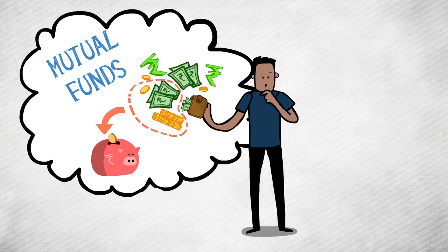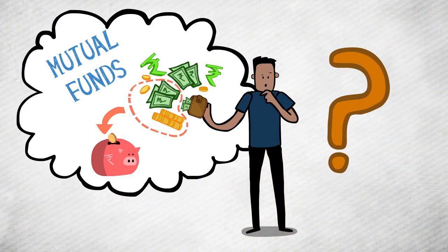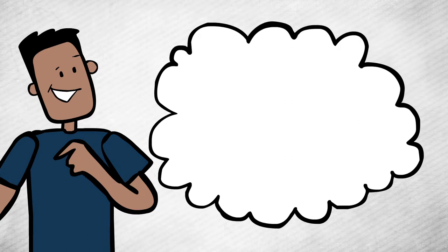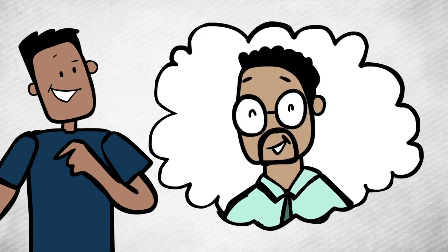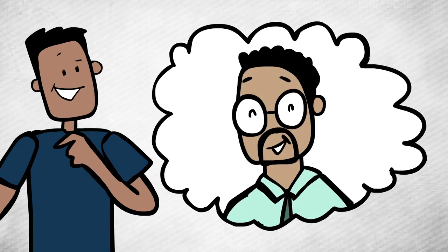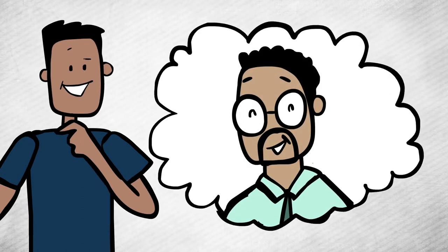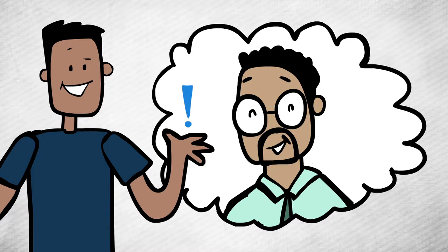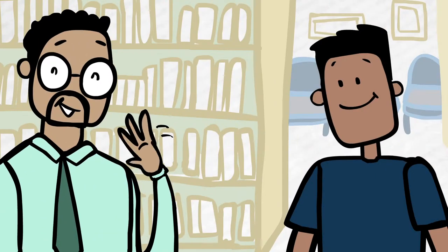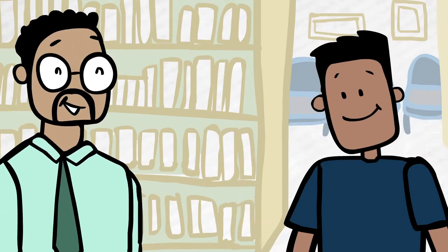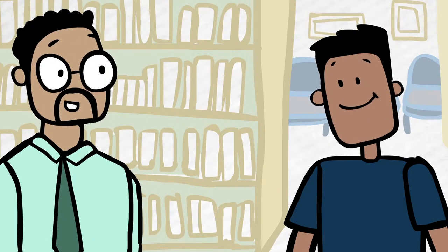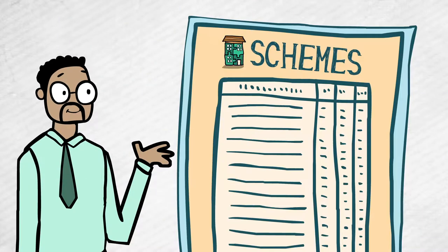But he doesn't know where to start. Then Kumar thinks: Mr. Khan, the financial advisor, has been calling me to help me invest. Why don't I ask him? Later that day, Kumar meets Mr. Khan and tells him his problem. Mr. Khan presents Kumar with a host of schemes to pick from.